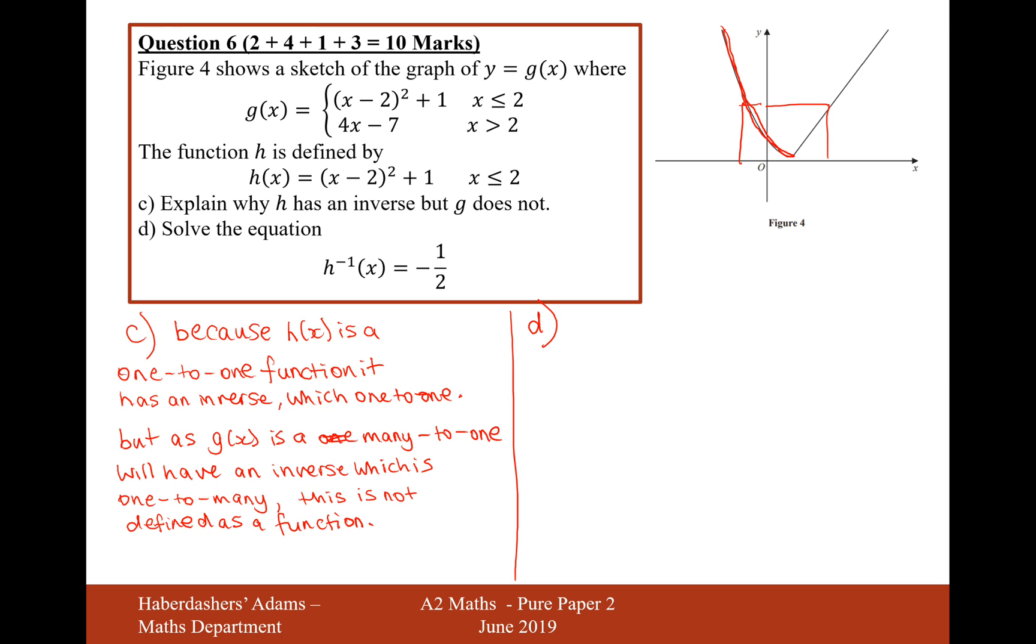And part d is solve the equation h inverse of x equals minus a half. Well this looks like a difficult question, but actually it's not really. If you work it out in a very difficult way it might be, but actually it's not. h inverse of x equals minus a half. Now what I'm going to do here, I'm going to be sneaky and I'm going to apply the function h to both sides. So apply the function h and apply the function h.